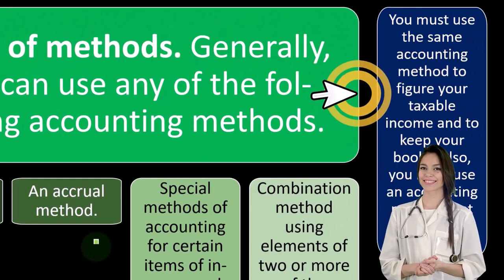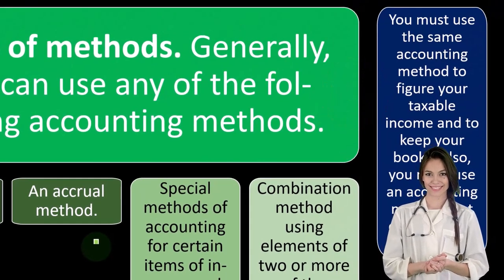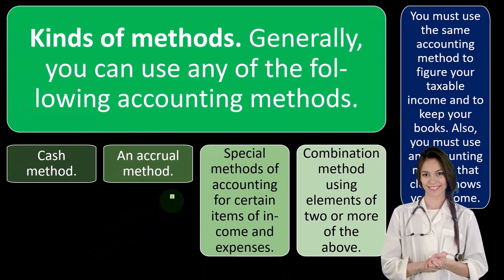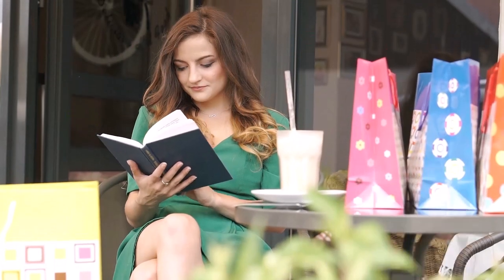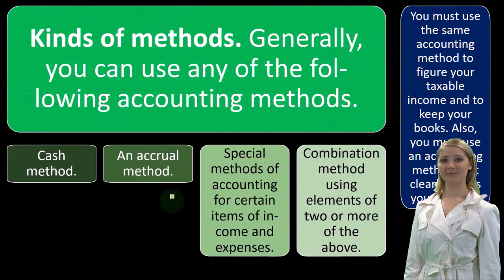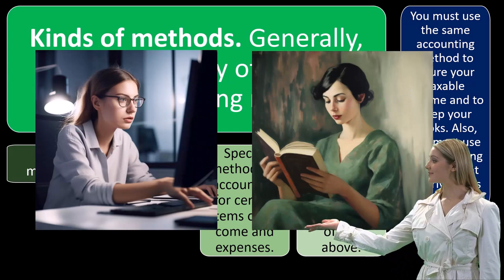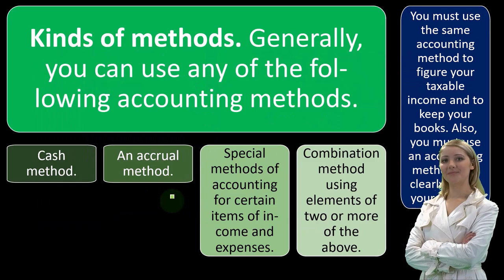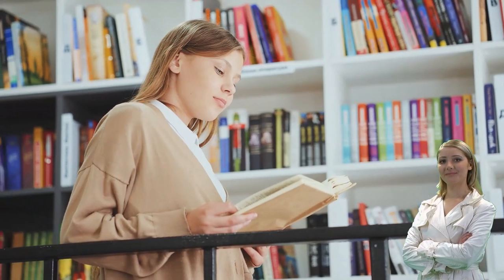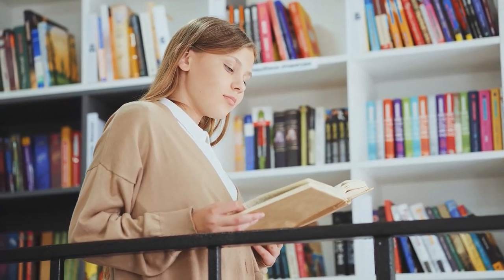You must use the same accounting method to figure your taxable income and to keep your books. The IRS is going to be skeptical if you say you're using an accrual method for your books but a cash method for your taxes — it looks like you're doing that in order to cheat on your taxes somehow, because it would be easier to use one method for both your bookkeeping and taxes. Whatever method you're using to keep your books should be primarily the same method you're going to use to do your taxes.